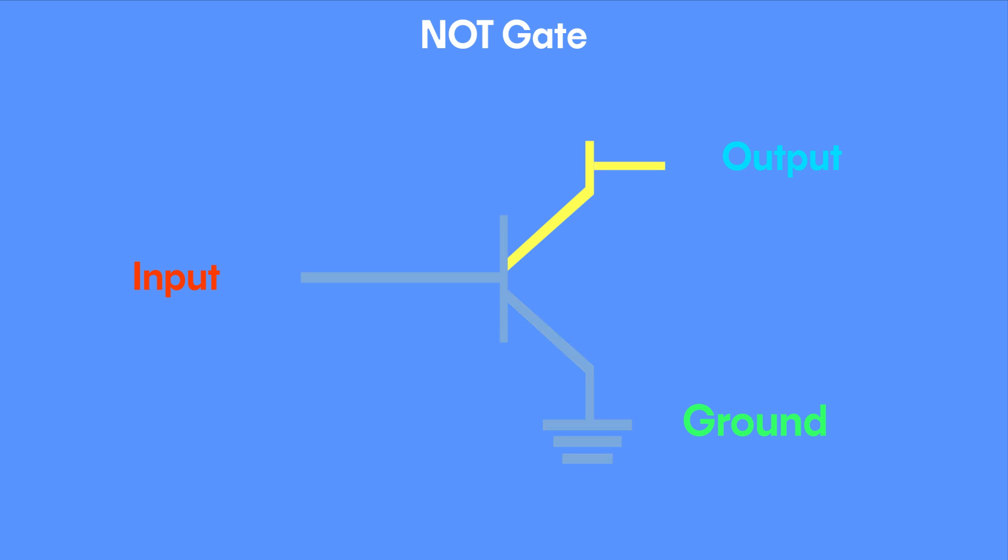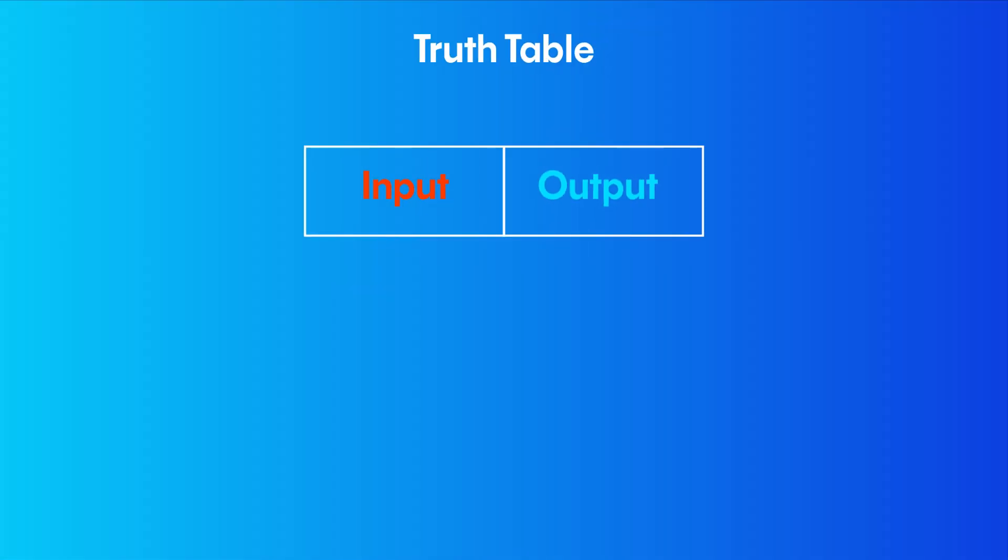On the other hand, when the current in the transistor is off, the current flows from the input wire straight to the output wire, resulting in a true output from a false input. That makes sense, right?